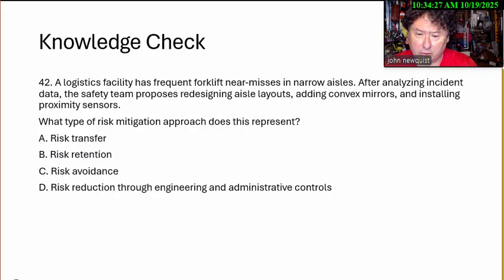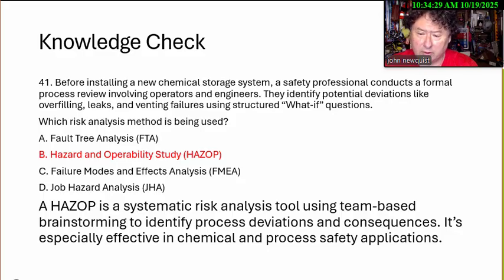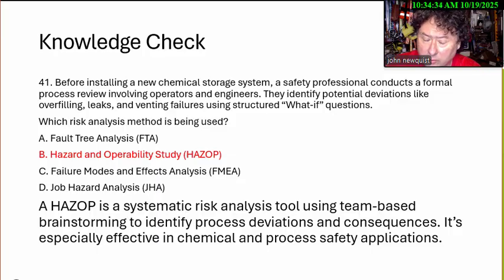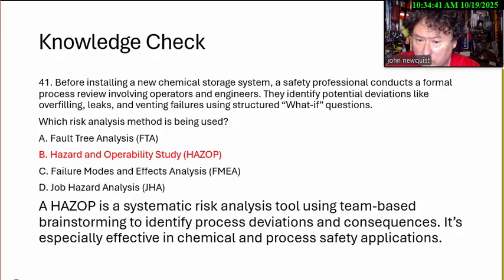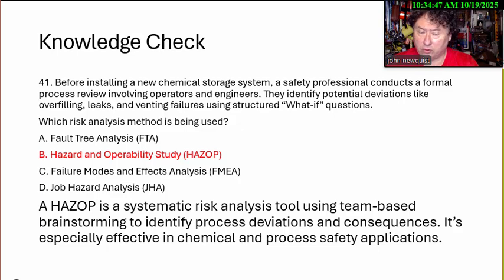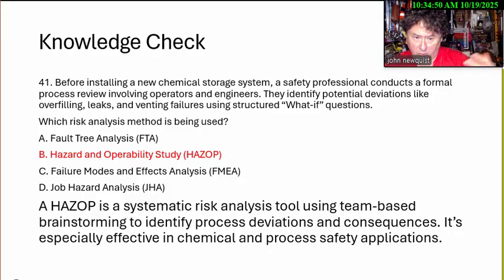When you see the word 'what-if,' that is a lot of times the cue — what if the pressure increases, what if the flow stops, what if the flow drops? These are what I call nodes, and you pick on every process on it. What if the drumming overfills? These are scenarios you go through in hazard operability, and then you determine what controls you need to prevent these, or what alarms will trigger.